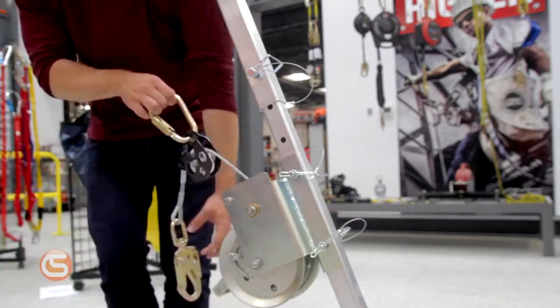Use the same process to attach the work winch to a different leg. Your tripod kit is now ready to be used in a confined space situation.